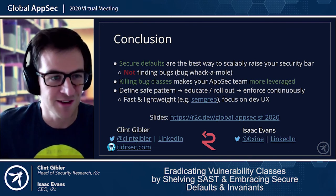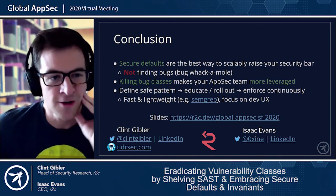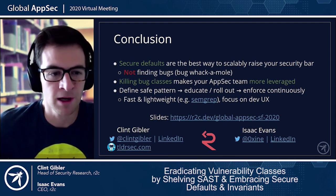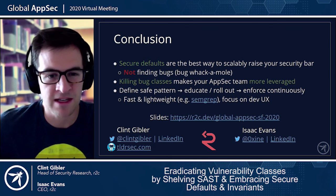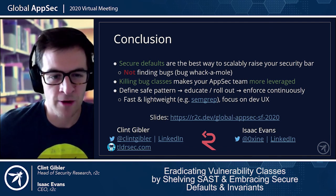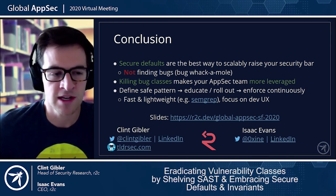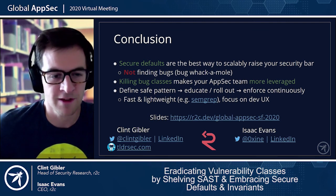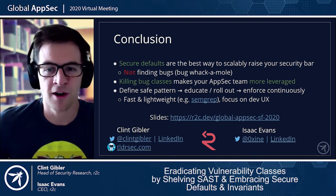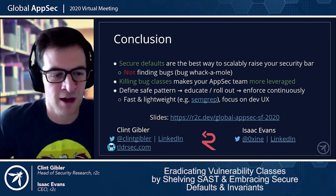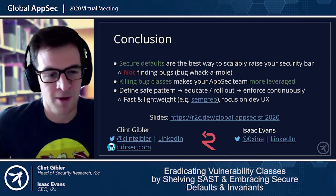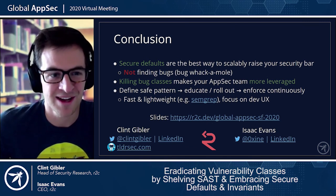In conclusion, secure defaults are the best way to scalably raise your security bar — not by playing bug whack-a-mole. Killing bug classes produces compounding results that make your AppSec team more leveraged: define a safe pattern, educate developers as you roll it out, and enforce it continuously with fast and lightweight tools. Semgrep may fit some of your use cases, and focus on the developer experience. We hope you've enjoyed this talk on eradicating vulnerability classes — go out and eradicate some vulnerabilities. Thank you.